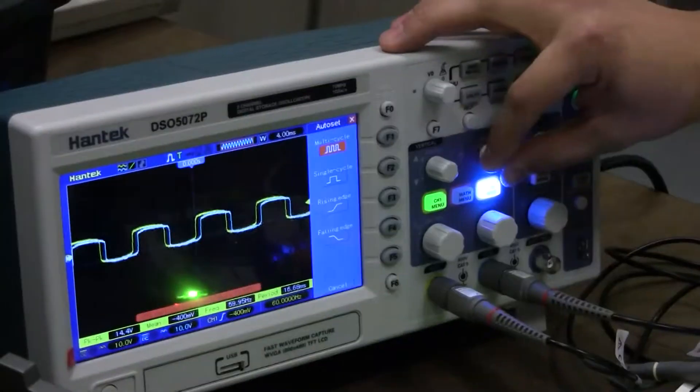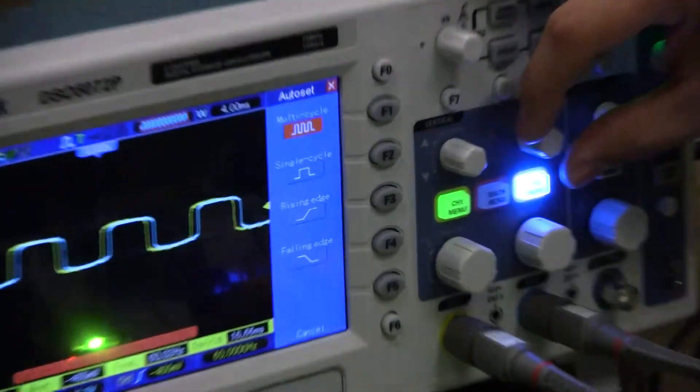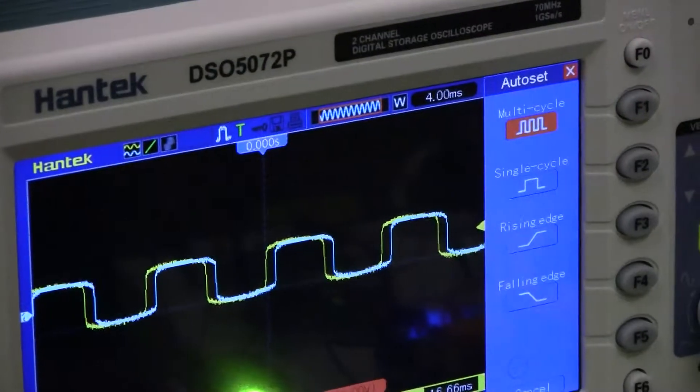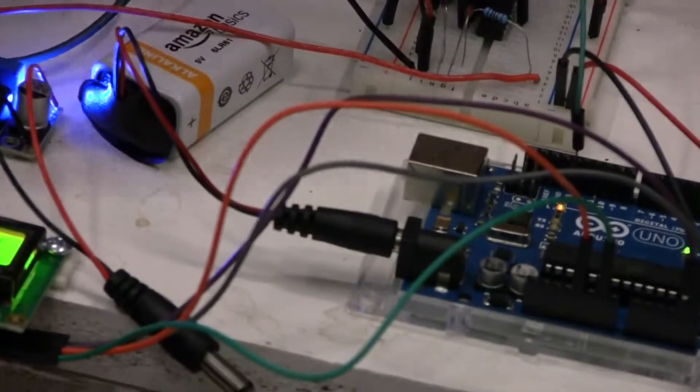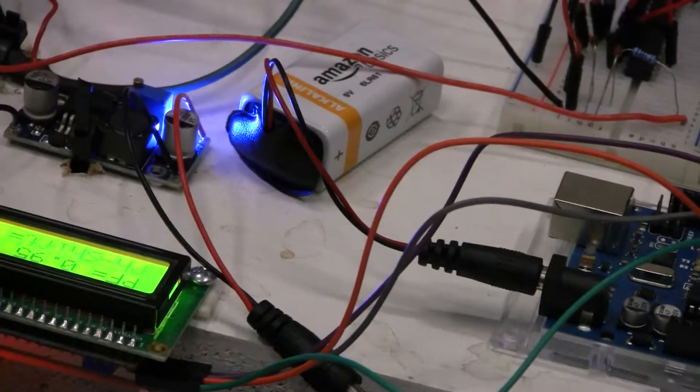The closer you can get both of them together, or overlapping each other, the better your power factor. Here, my Arduino can actually determine what the power factor is. It shows about a power factor of 95.